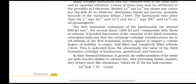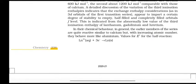The lanthanide ions other than type f0 (La3+ and Ce4+) and f14 type are all paramagnetic. The first ionization enthalpies of the lanthanides are around 600 kJ/mol, the second about 1200 kJ/mol, comparable with those of calcium. A detailed discussion of the variation of third ionization enthalpies indicates that exchange enthalpy considerations appear to impart a certain degree of stability to empty, half-filled, and completely filled orbital levels. This is indicated from abnormally low values of the third ionization enthalpy of lanthanum, gadolinium, and lutetium.